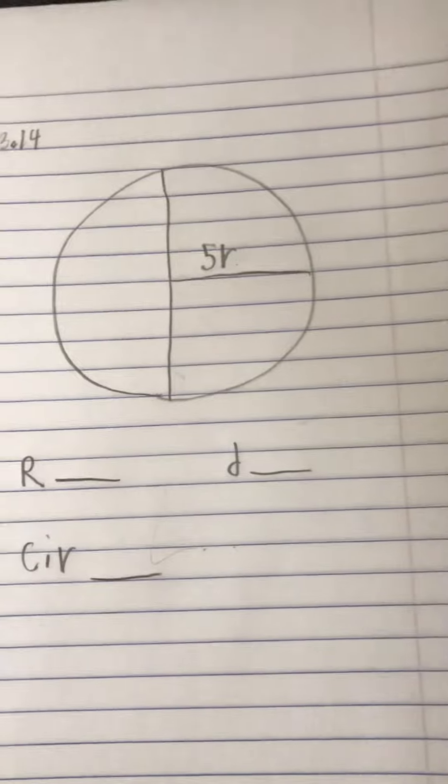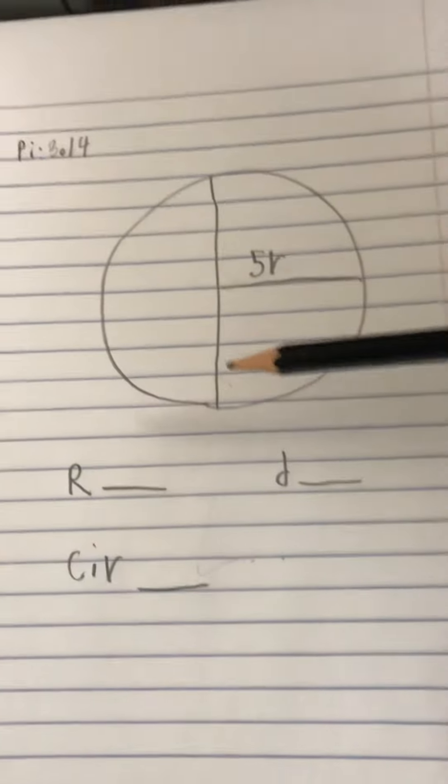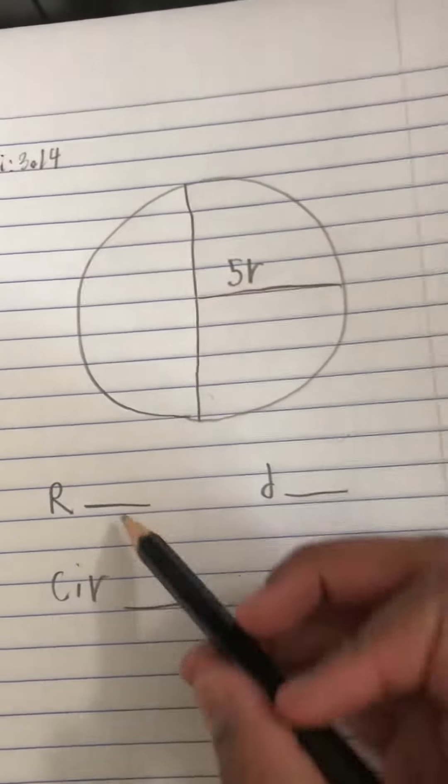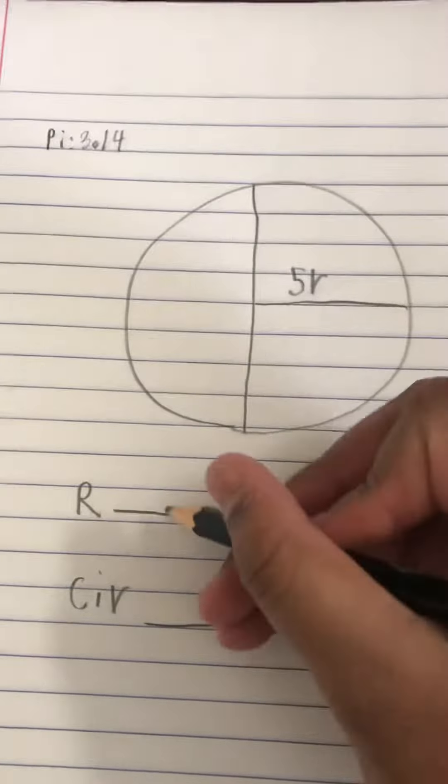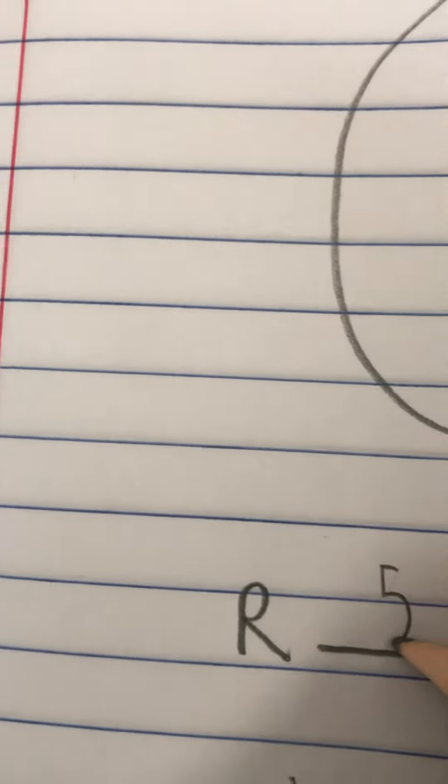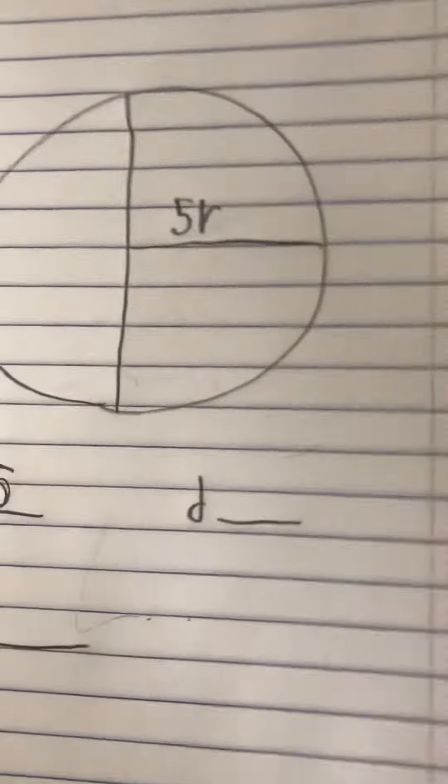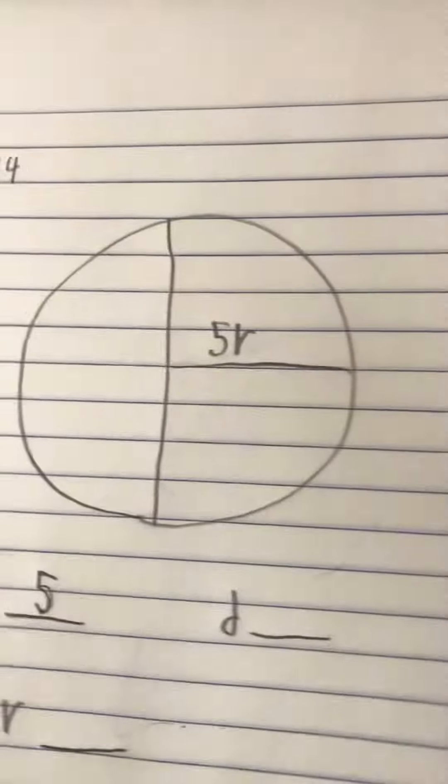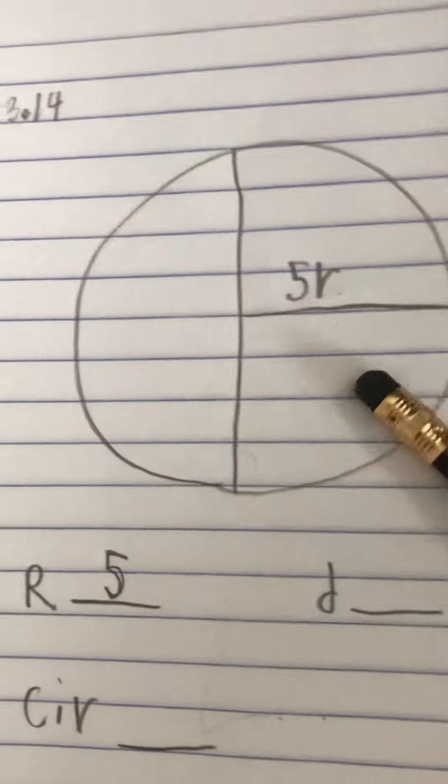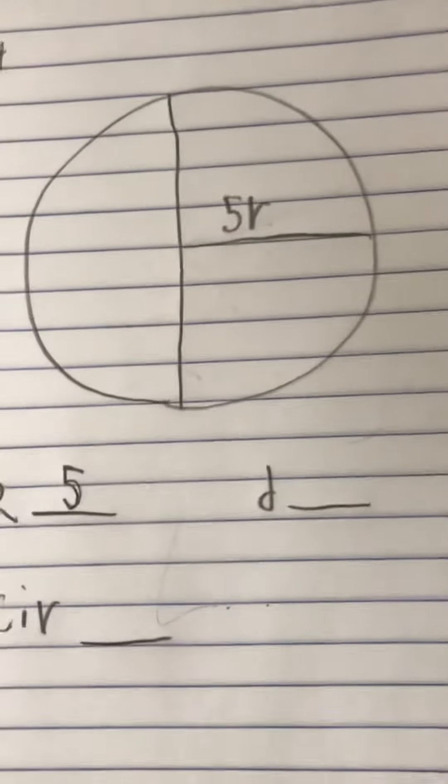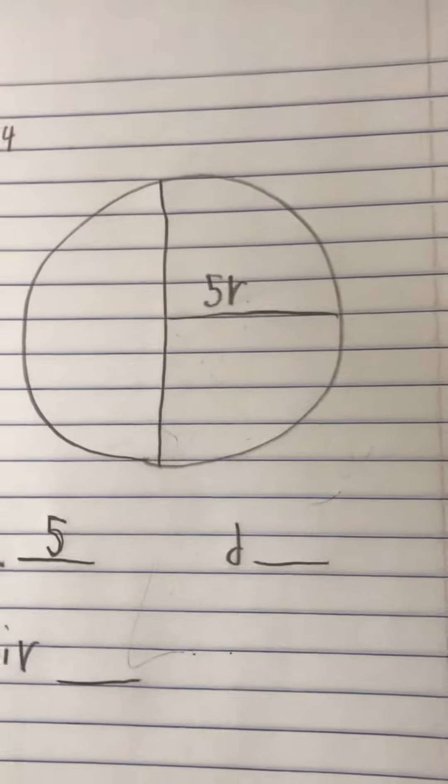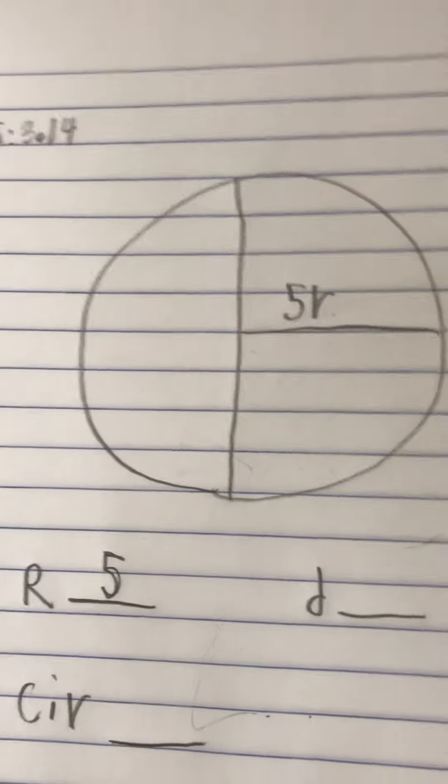So that means we know this is 5. And we also know this is radius, right? The radius is 2 times smaller than the diameter.